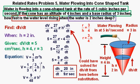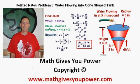And alternatively, we could have solved for dh/dt from here up above before having substituted for h and dV/dt in the next step. This has been Related Rates Problem 5, water flowing into cone-shaped tank. Thanks for viewing.